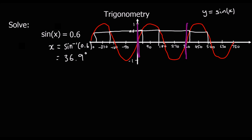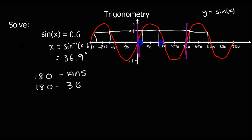That's the first answer. What's the second answer? We use symmetry — this distance here is the same as this distance here. 36.9 is our first answer, that's the distance here, so the second answer is 180 minus the first answer: 180 minus 36.9, which is 143.1 degrees.